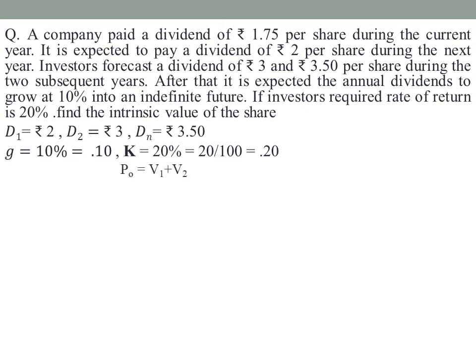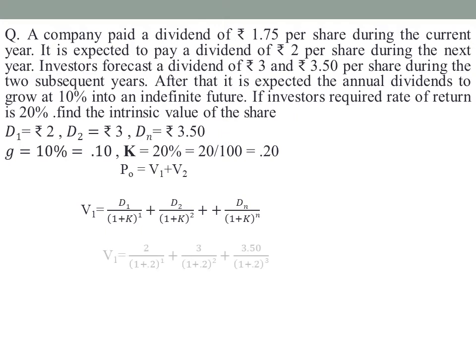The formula is P0 equals V1 plus V2. To calculate V1, we use: D1 divided by (1 plus k) raised to 1, plus D2 divided by (1 plus k) raised to 2, plus Dn divided by (1 plus k) raised to n. Substituting values: 2 divided by (1 plus 0.2) raised to 1, plus 3 divided by (1 plus 0.2) raised to 2, plus 3.50 divided by (1 plus 0.2) raised to 3. Adding these gives V1 equal to Rs. 5.78, which is the present value of dividends during the extraordinary growth period.